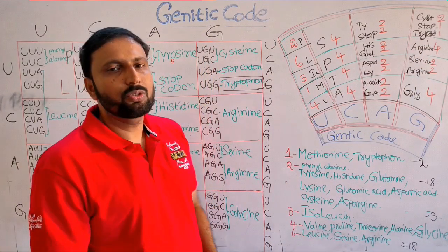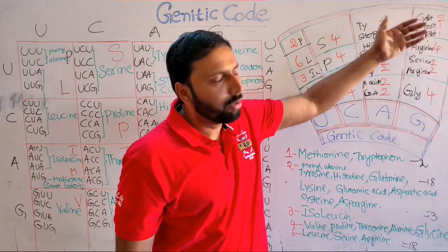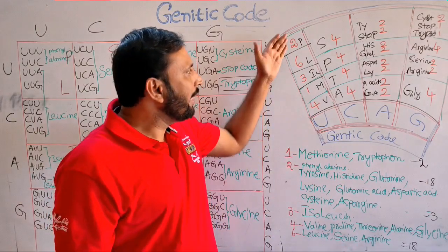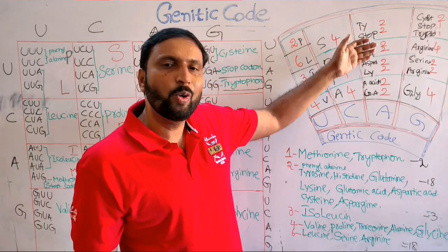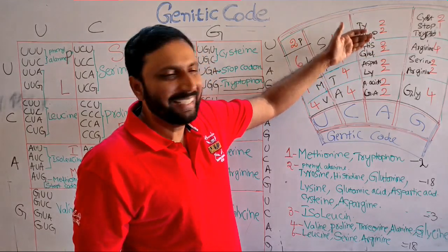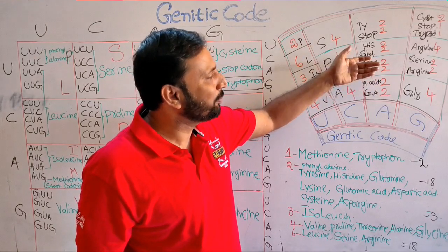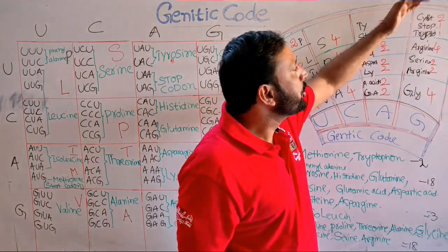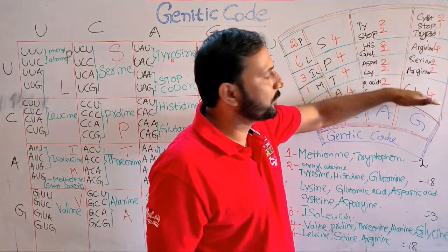So these are the codons. Pattern: 2, 6, 3, 1, 4. All are 4s. All are 2. Then 2, double 1, 4, double 2, 4. It is very simple — you can remember easily. Code is PLIMV, SPTA, TYRO-stop, and 'he is glamorous' meaning histidine, glutamine, glutamic acid, asparagine, aspartic acid. In between asparagine and aspartic acid, lysine. Then cysteine, stop, tryptophan. Arginine, arginine — with serine in between — and last, glycine.